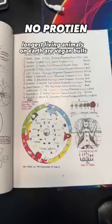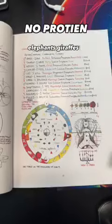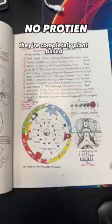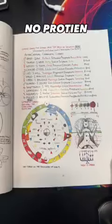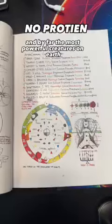The strongest, biggest, longest living animals on Earth are vegan. Bulls, elephants, giraffes, gorillas, rhinos, and horses. They're completely plant-based and by far the most powerful creatures on Earth.